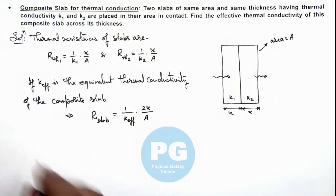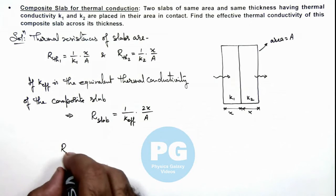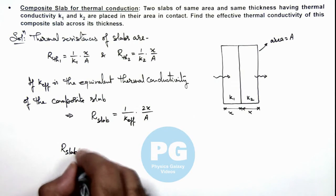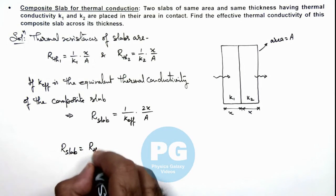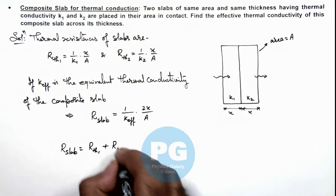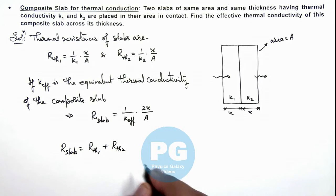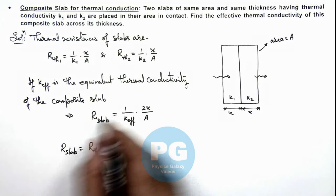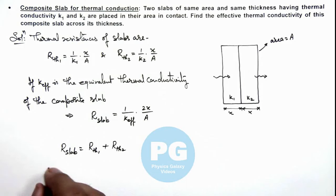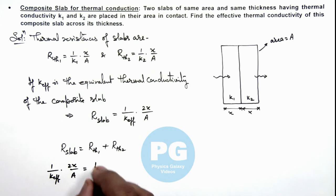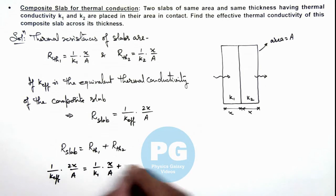And we can write total slab resistance is equal to thermal resistance of first slab plus thermal resistance of second slab. So we substitute the values. This R_slab is 1 by k_eff multiplied by 2x by A. This should be 1 by k1 multiplied by x by A plus 1 by k2 multiplied by x by A.